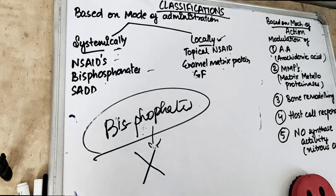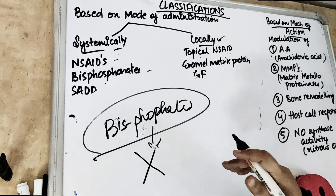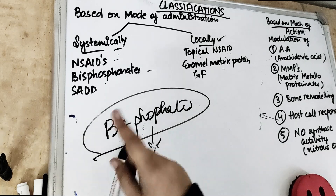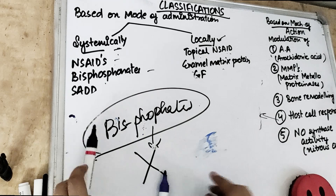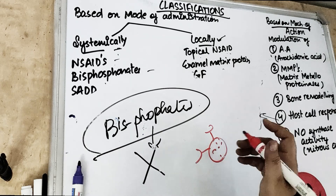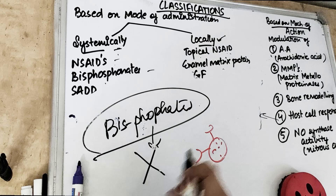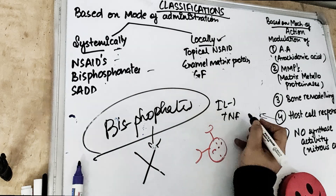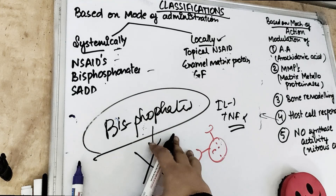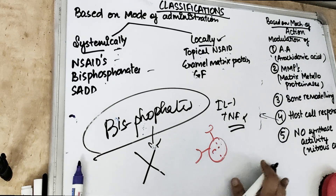Bisphosphonates prevent osteoclastic activity. Then there is modulating the host response — like mast cells have receptors for antigen, all cells have receptors — we are blocking receptors for interleukin-1 and TNF-alpha so the inflammatory product cannot be released. The last mechanism is modulation of NO synthetase activity — blocking the synthesis of nitric oxide, which is released during inflammation in the presence of prostaglandins.